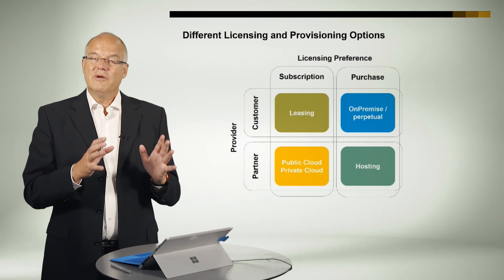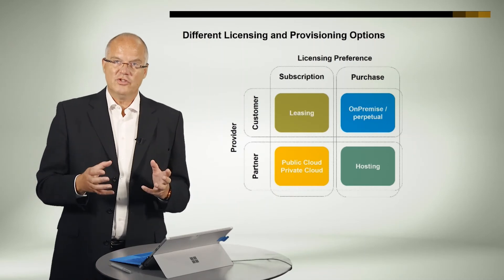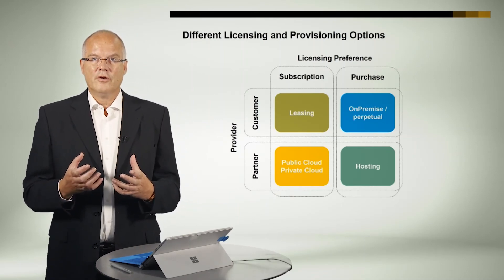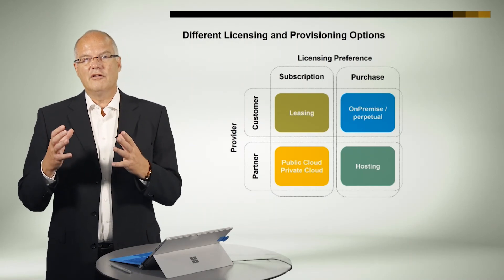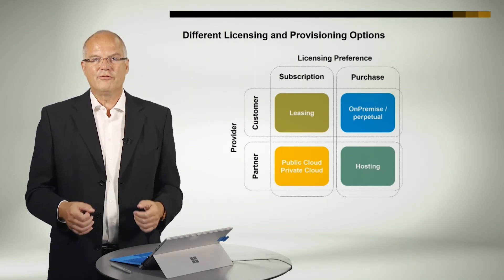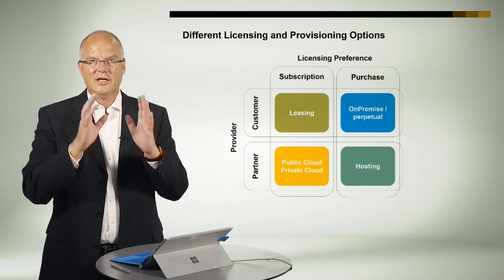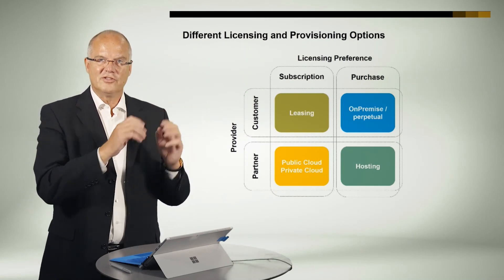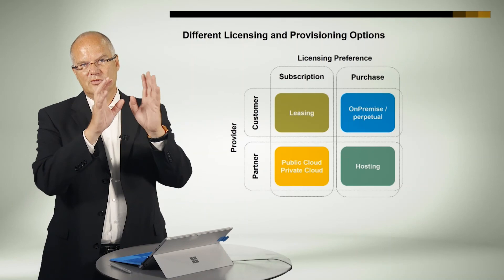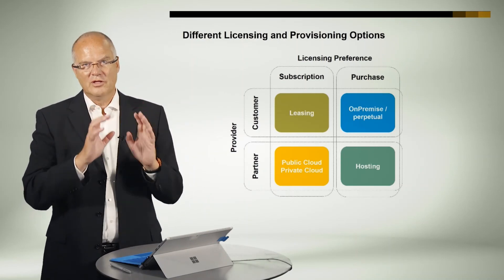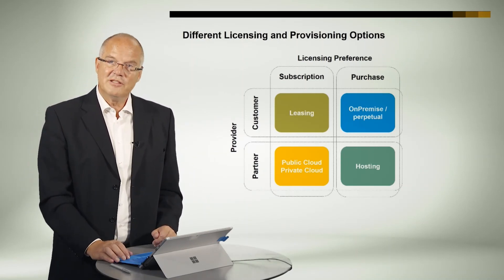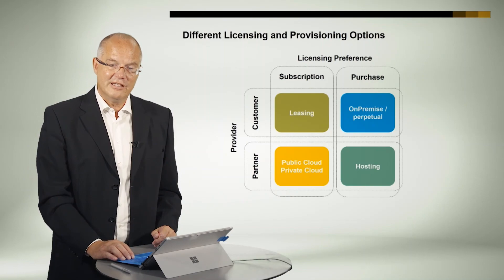This simple 2x2 matrix shows you that if we want to serve the market, we need to have all of these capabilities. We need offerings for customers who say 'I want to buy the license' versus 'I want to subscribe,' for those who say 'I want to operate it on my own,' and for those who say 'I'm out of the business of operating that infrastructure.'